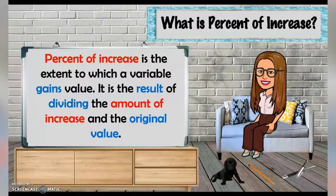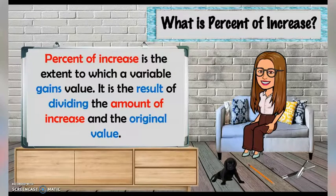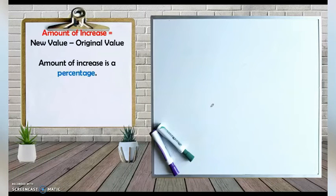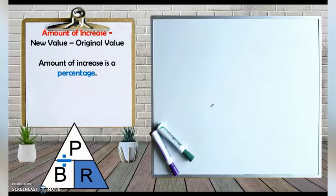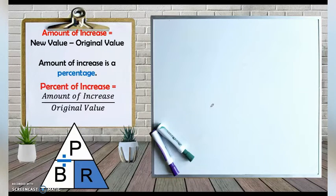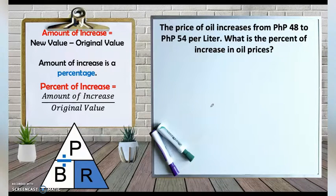Before answering, let's define first what is percent of increase. Percent of increase is the extent to which a variable gains value. It is the result of dividing the amount of increase by the original value. To find the amount of increase, subtract the new value minus the original value. The amount of increase is the percentage. Using the triangle, the formula for rate is percentage divided by base, so percent of increase equals amount of increase divided by the original value.